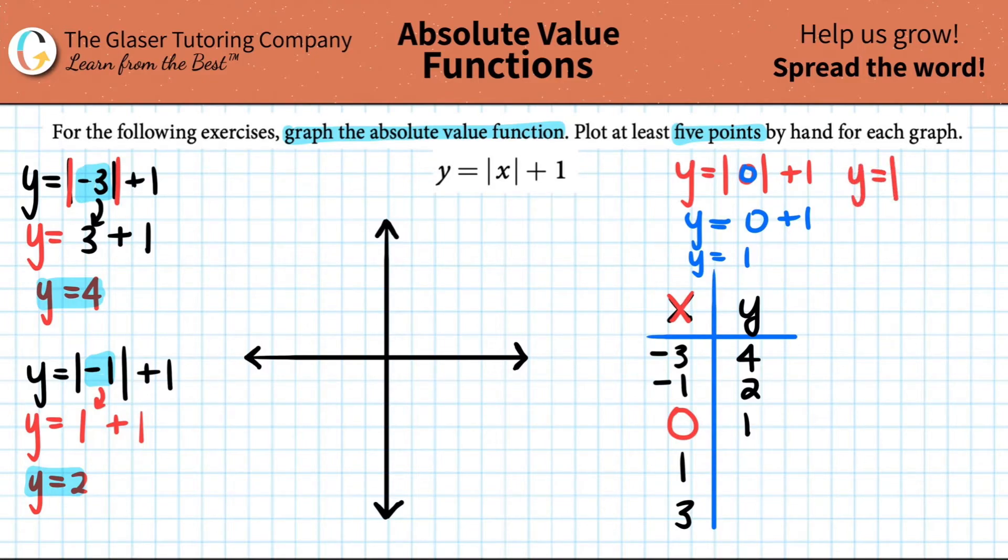Y equals the absolute value of, I'm going to plug in the one now. So Y equals the absolute value of one plus one. Well, now it's already a positive. So the absolute value of a positive number is going to be the same number because absolute values always give out the positive answer. So one plus one, Y equals two. So that goes here.